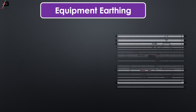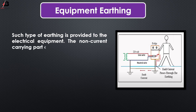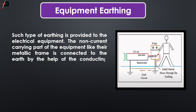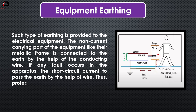Equipment earthing: such type of earthing is provided to the electrical equipment. The non-current carrying part of the equipment, like the metallic frame, is connected to the earth by the help of a conducting wire. If any fault occurs in the equipment, the short circuit current passes to the earth by the help of the wire, thus protecting the system from damage.